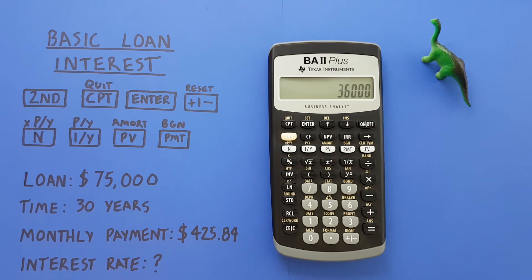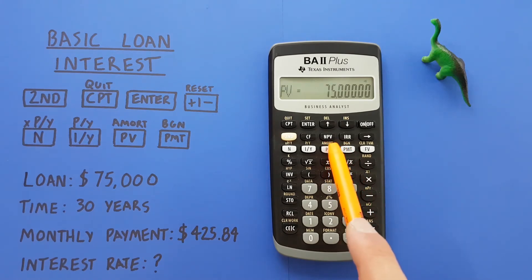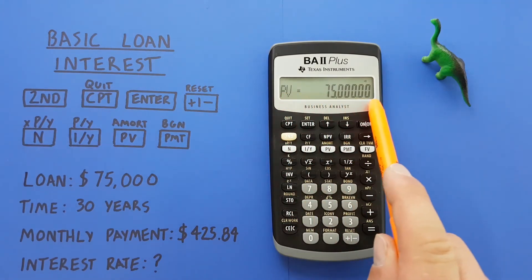Next we enter our loan amount. That was 75,000, so we enter 75,000 and then press the PV or present value key. That's entered as our present value.